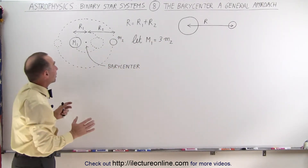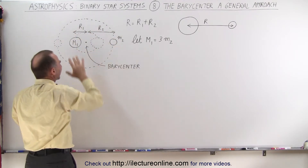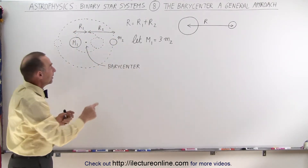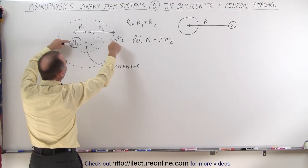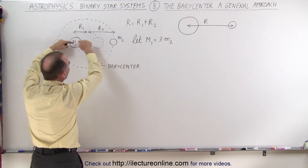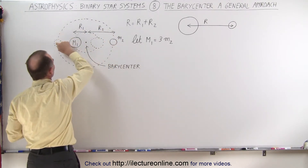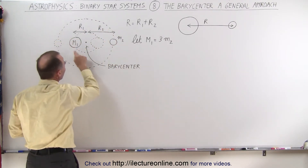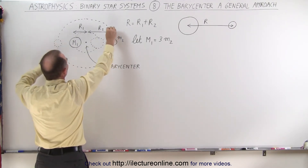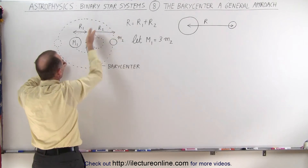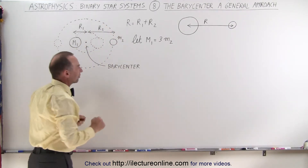What we have to realize is that as the small object revolves around the bigger object — and technically speaking, they're both revolving around the barycenter — they're always opposite to one another relative to the barycenter. So as this object makes a half revolution in one direction, then this object will move a half revolution the other way, so that they're always opposite to one another with the barycenter right on the line that connects the two masses.